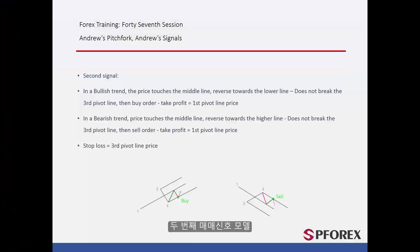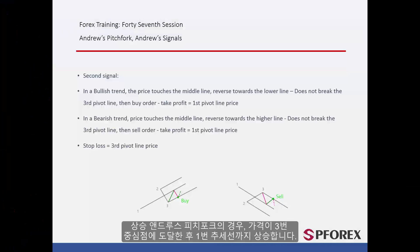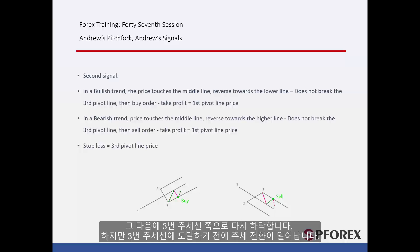The second signal model. In a bullish format, after price has reached the third pivot, it will increase until the first pivot line. Then, the price decreases towards the third pivot line again.